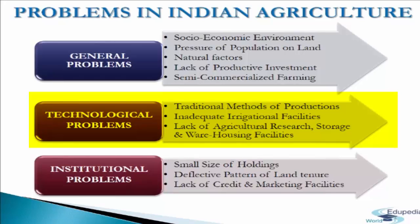The next technological problem is lack of agricultural research, storage, and warehousing facilities. Agricultural research in India is very outdated in comparison to its requirements, and whatever research is done, its results are not made available to farmers for application. Many chronic problems of agriculture faced by farmers thus remain largely unattended. Additionally, due to lack of storage and warehousing facilities, a huge portion of the crop is wasted.